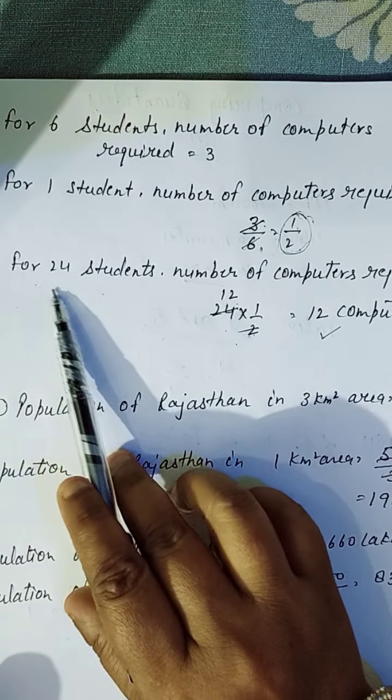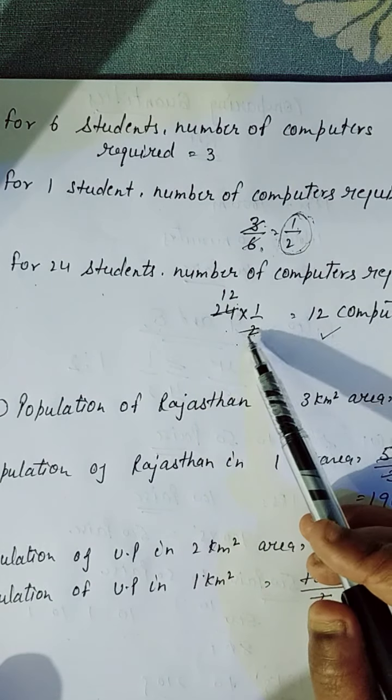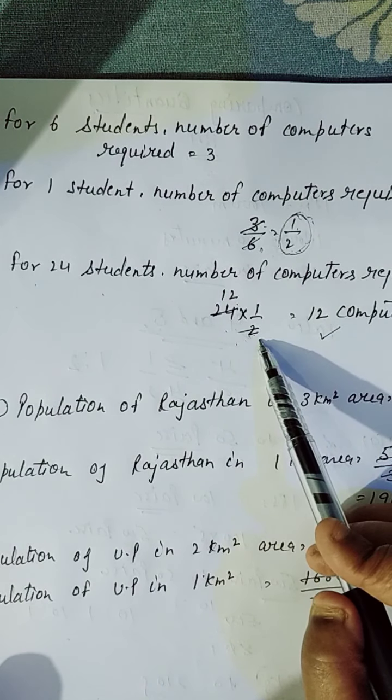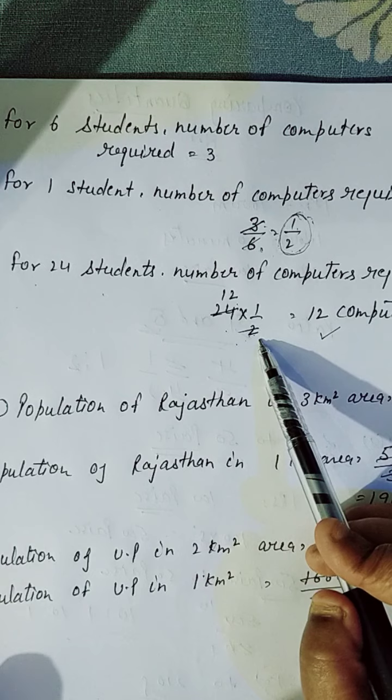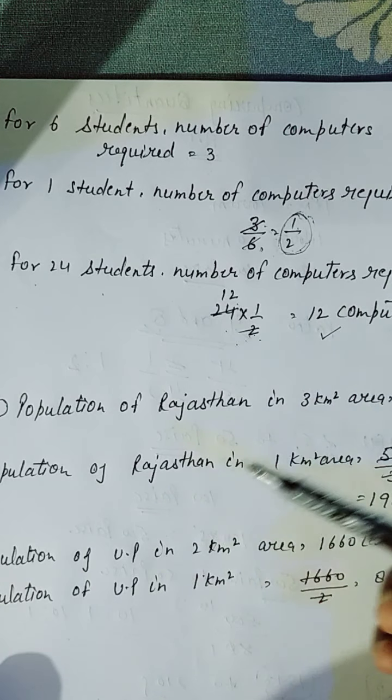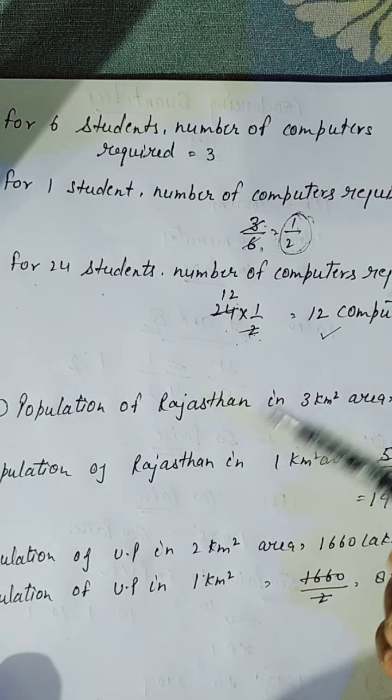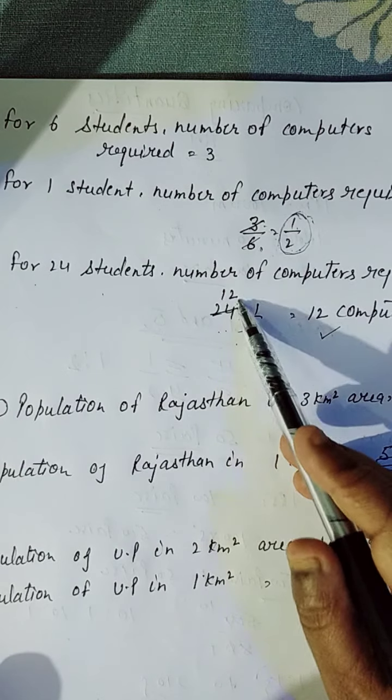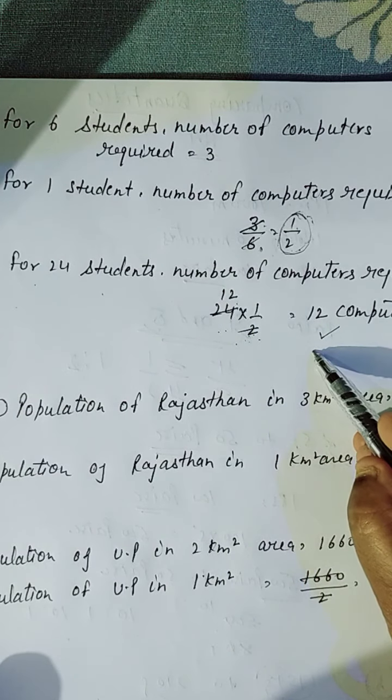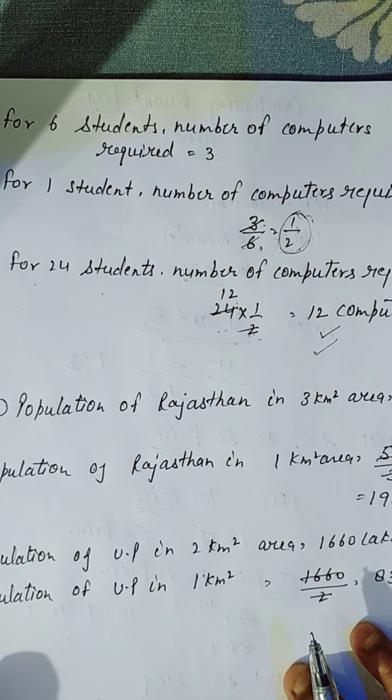So, for twenty-four students, number of computers required kitna hooghe? Hamein se kya karenghe? Twenty-four se one ka nikalke, agar main aap se poochon ki, five pens ki cost kitne hooghe? To, aap fifty bata doonghe. Ten multiply by five. So, simple wahi hai, twelve multiply by one by two. To, kitna aa jayega aapka? Twelve computers. To, yeh tha aapka second question.